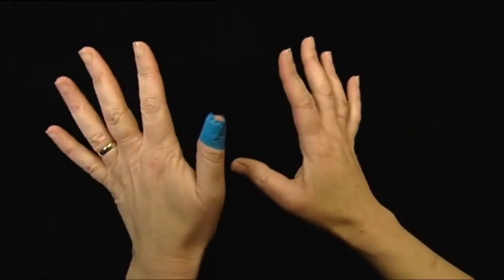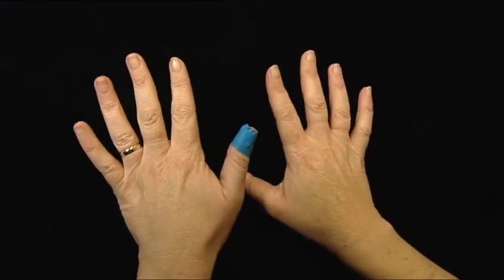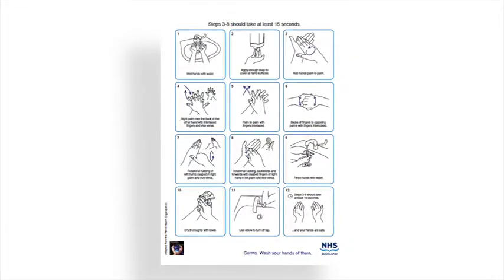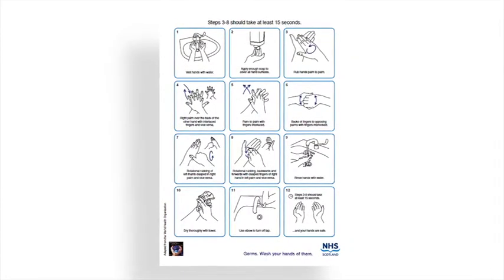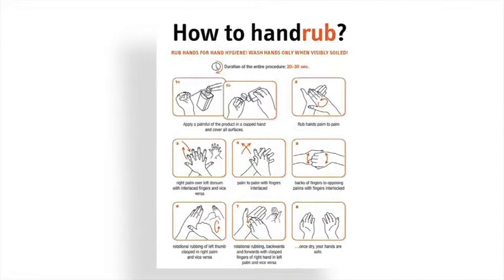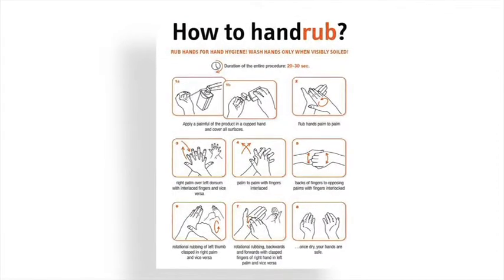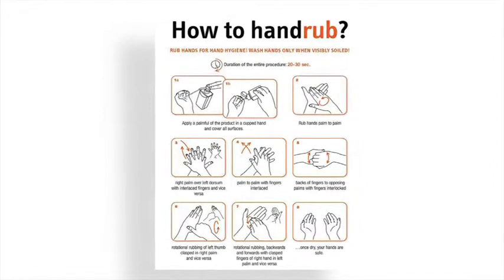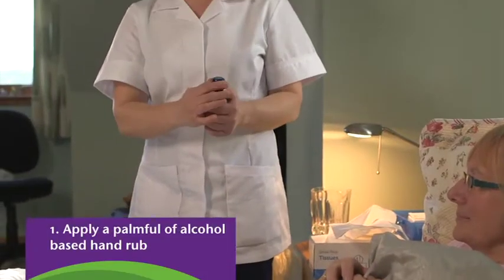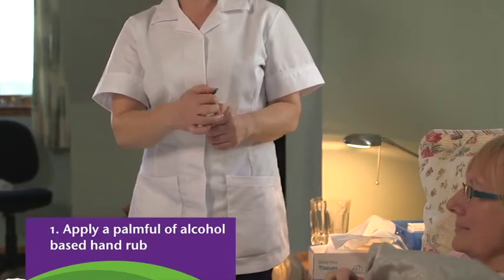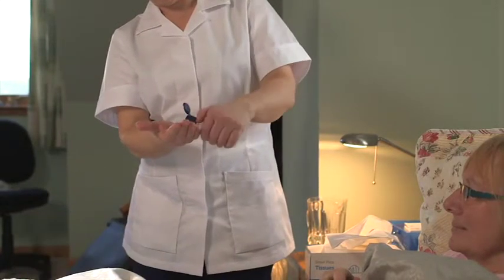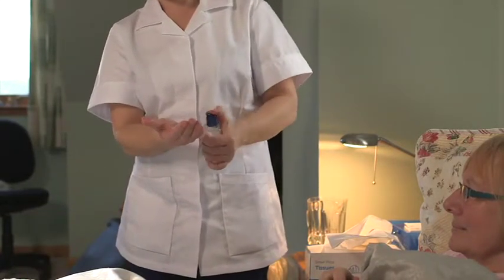You should also bare your arms to the elbow and remove watches and bracelets. It is important to use the correct technique when undertaking hand hygiene. The following procedure describes the steps you should take to clean your hands properly with an alcohol-based hand rub. 1. Apply a palmful of alcohol-based hand rub from a dispenser into a cupped hand and cover all surfaces.